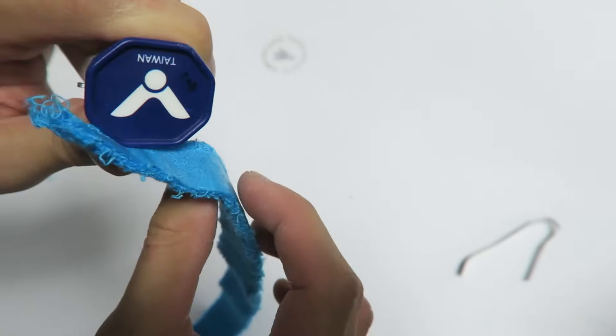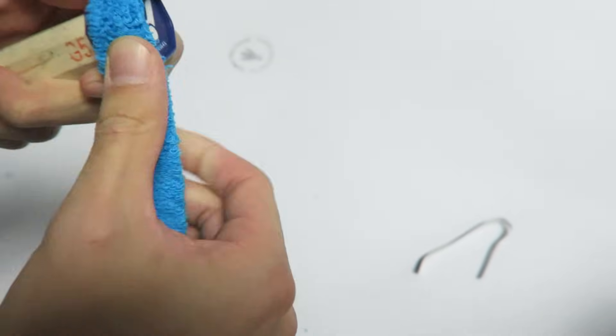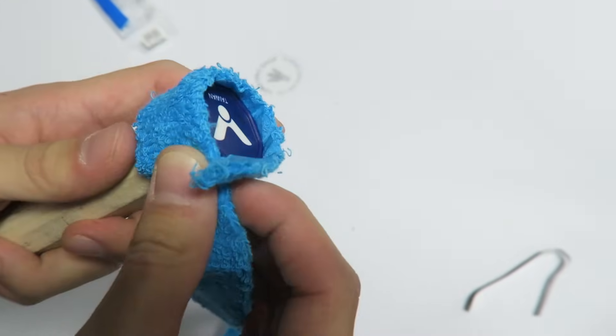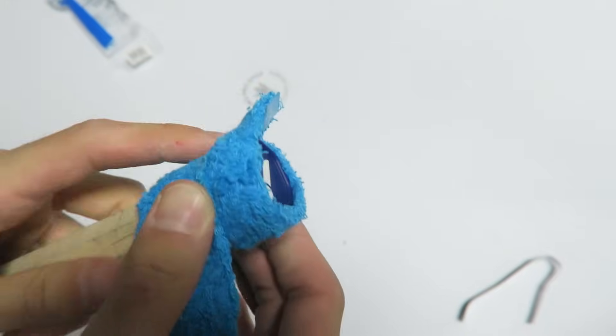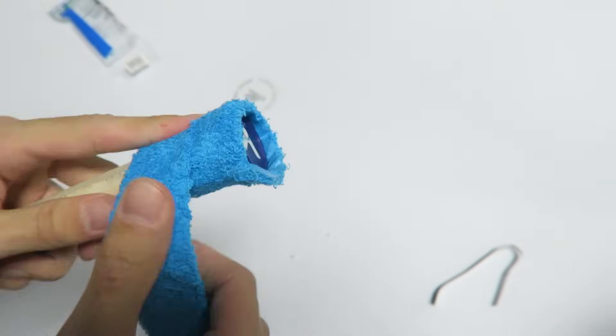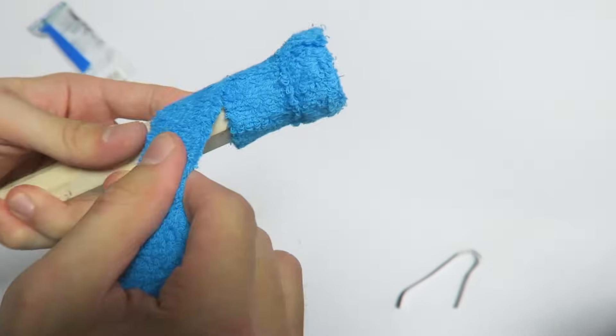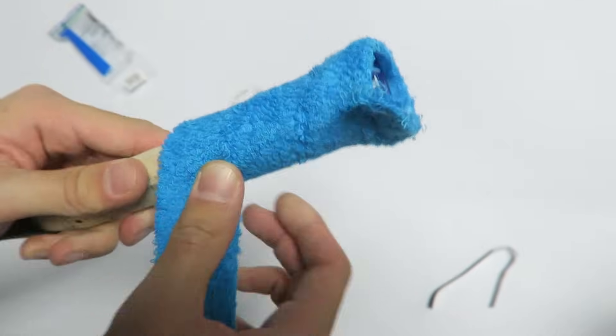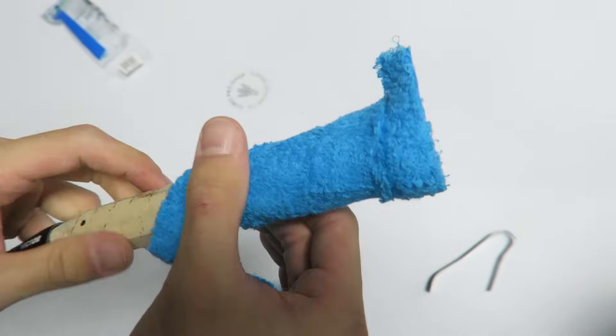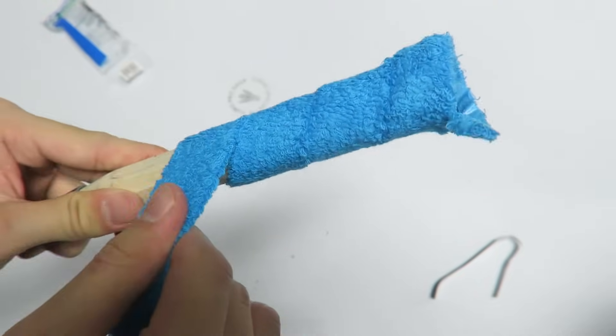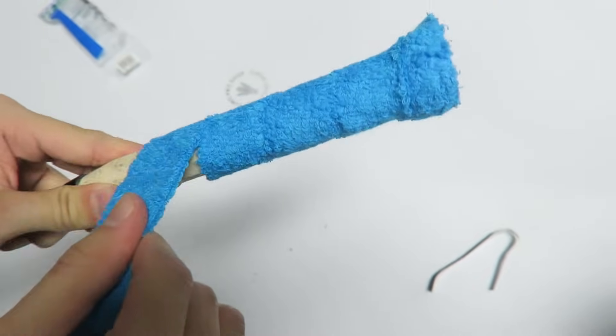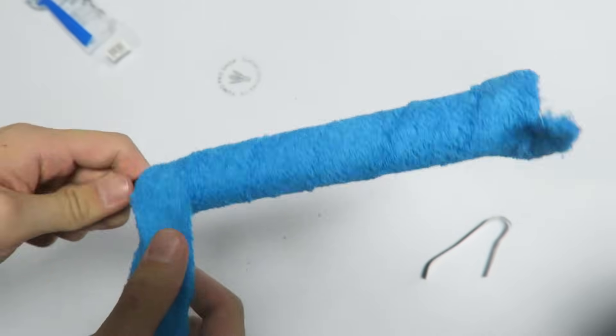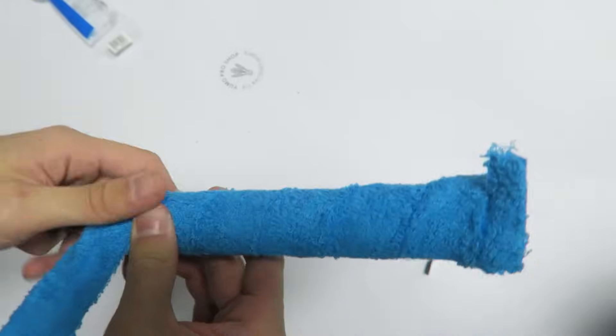Like this and then you start wrapping like that and you just want to align the edges of the grip so that they don't overlap. To make sure you have a nice even grip.